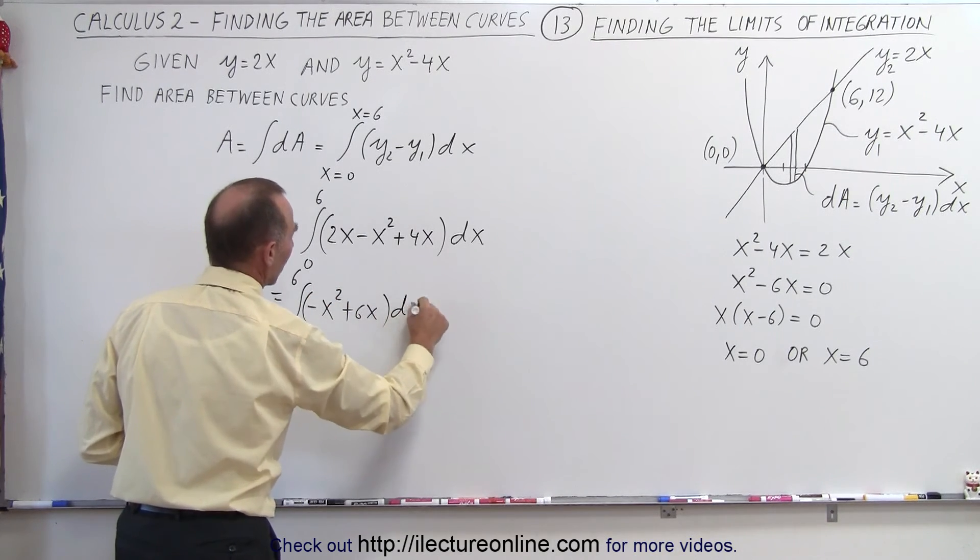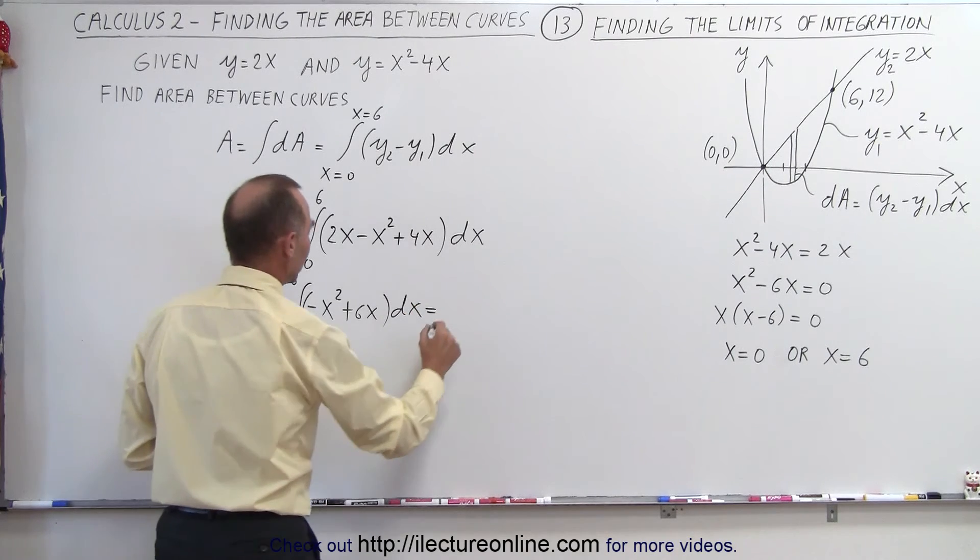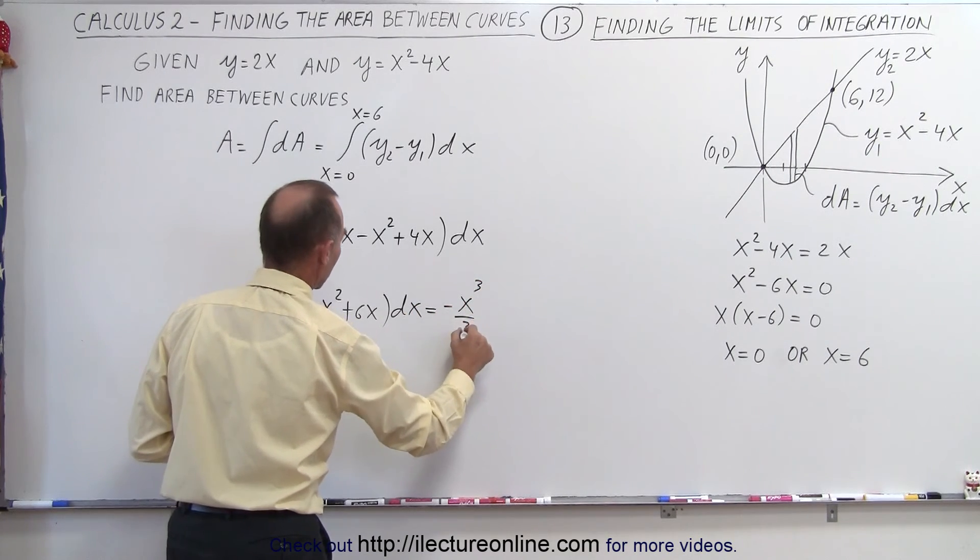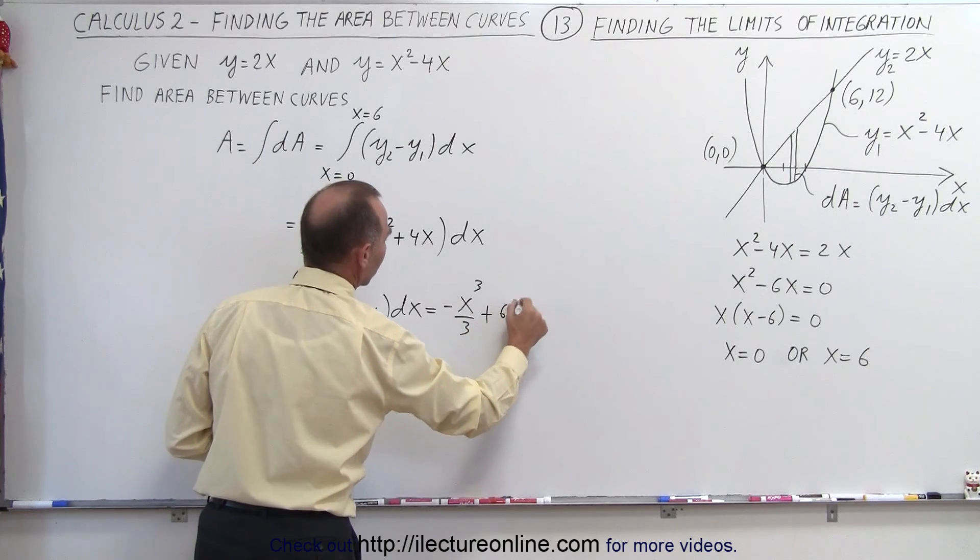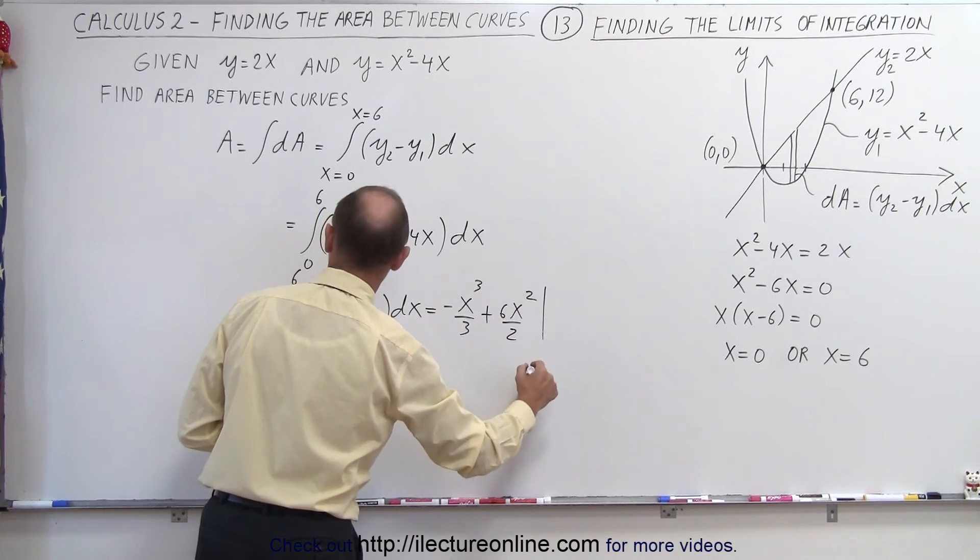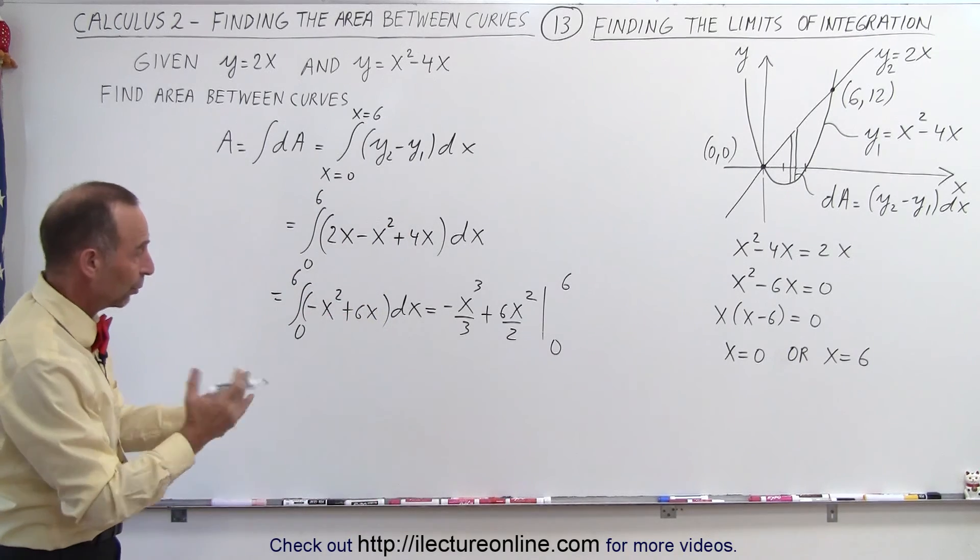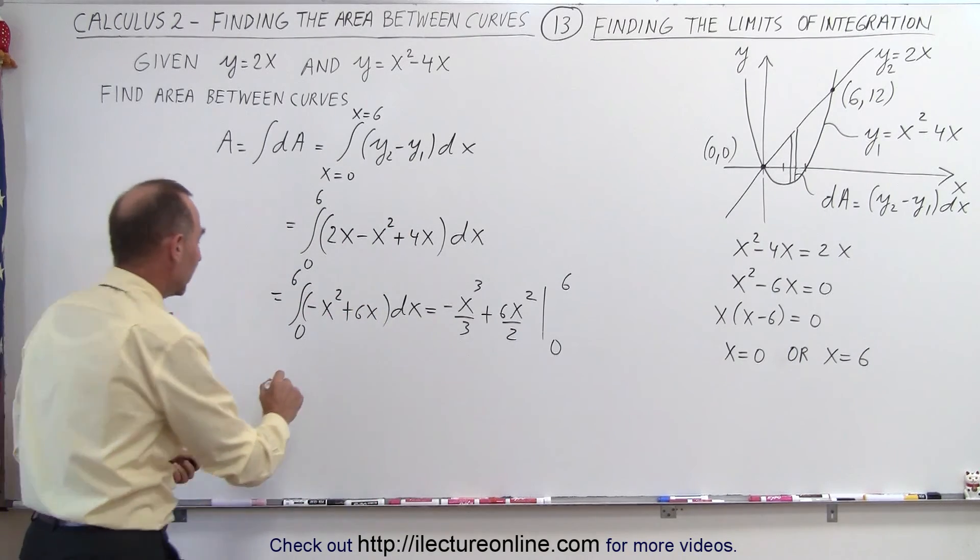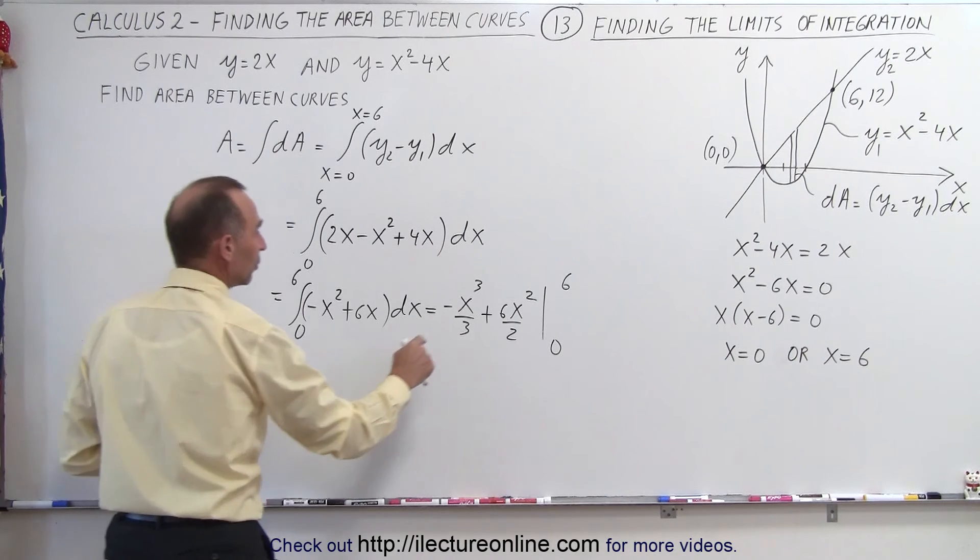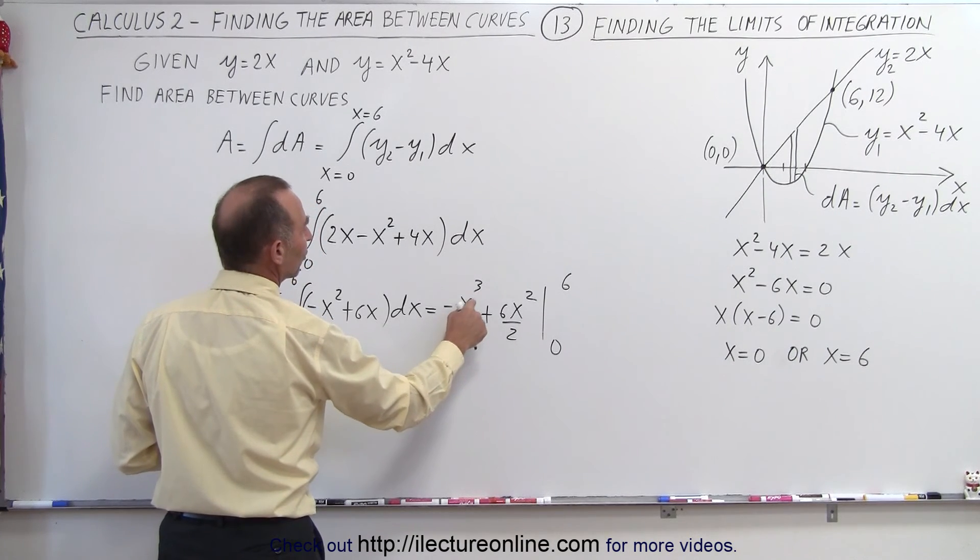And when we integrate, we get the following: this is equal to minus x cubed over 3 plus 6x squared over 2, evaluated from 0 to 6. When we plug in the lower limit we get nothing.